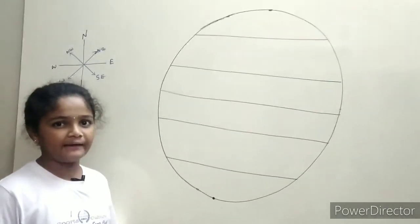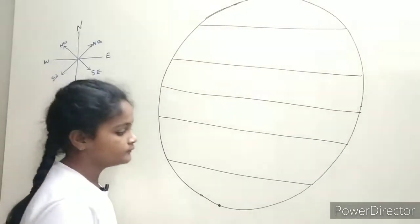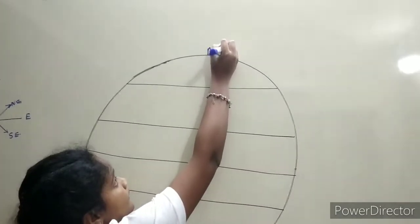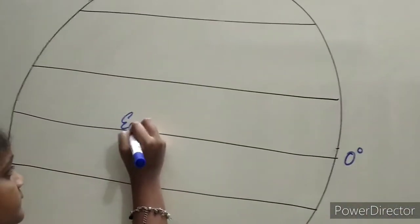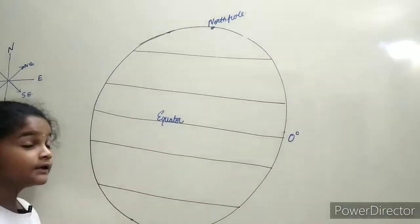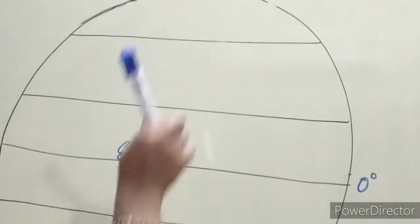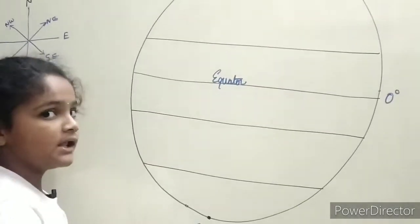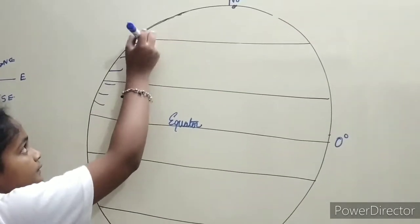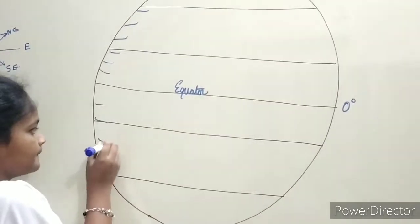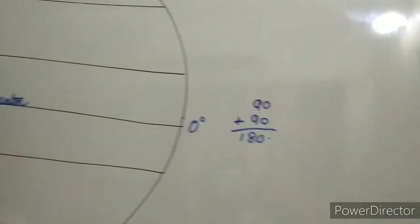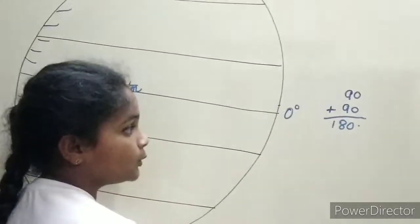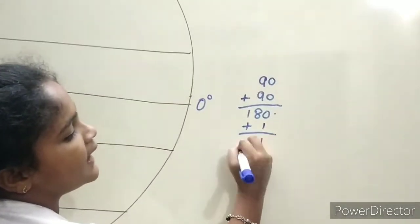The horizontal lines are latitudes. Between North Pole and South Pole, the centre line is the 0 degrees Equator. The Equator divides into Northern Hemisphere and Southern Hemisphere. From Equator to North Pole there are 90 latitudes. From Equator to South Pole also 90 latitudes. So 90 plus 90 equals 180 latitudes without Equator. With Equator, 181 latitudes in total.